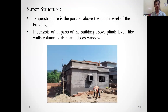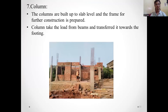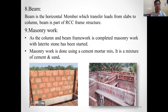The superstructure is the portion above the plinth of the building. It consists of columns, slabs, beams, doors, windows, etc. The column is a vertical member of the structure that takes the load from the beam and transfers it toward the footing. The beam is a horizontal member which transports the load from the slab to the column, and it is one of the most important members of the structure.